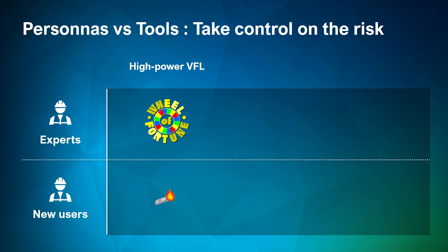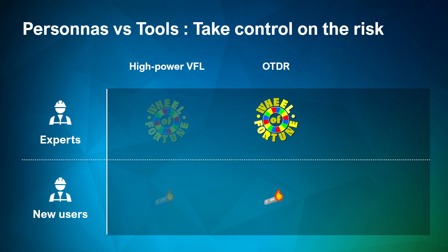We're seeing a lot more high-powered VFLs that can test tens of kilometers. These VFLs can damage SFPs or transceivers. Somebody with more expertise might know they need to attenuate the signal before plugging in on shorter lengths, but new users may not have that level of expertise. We're also seeing this with OTDRs when trying to do fault isolation — you really need to set up your OTDR properly. A lot of new users will use auto mode, and auto mode will burst high energy or high power to evaluate the link, so it can damage transceivers as well.